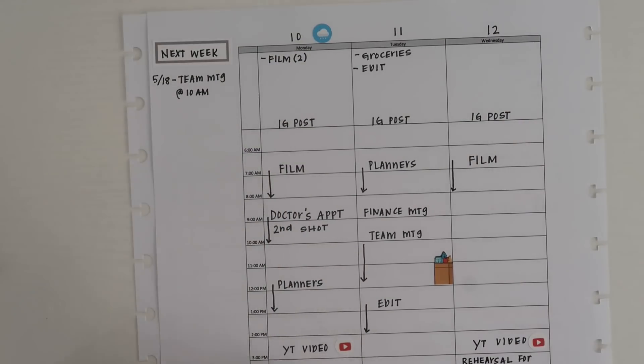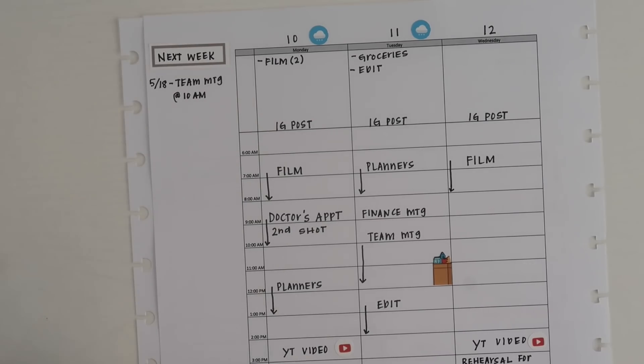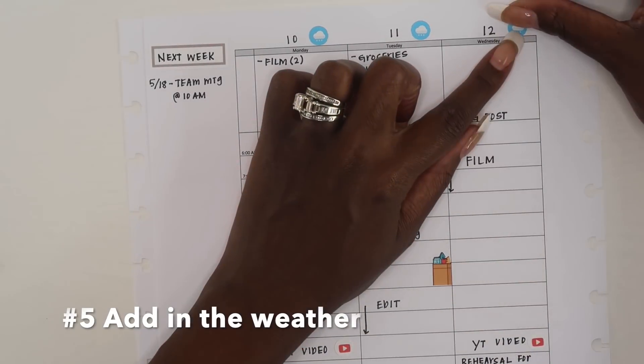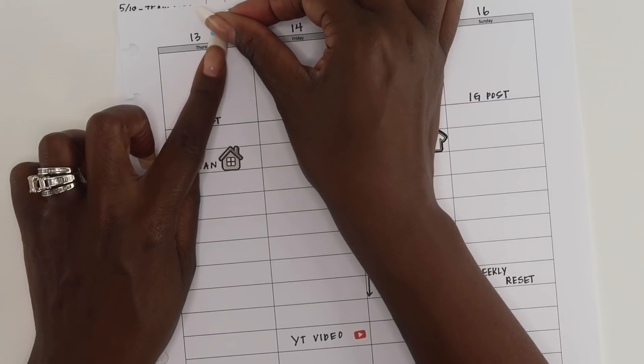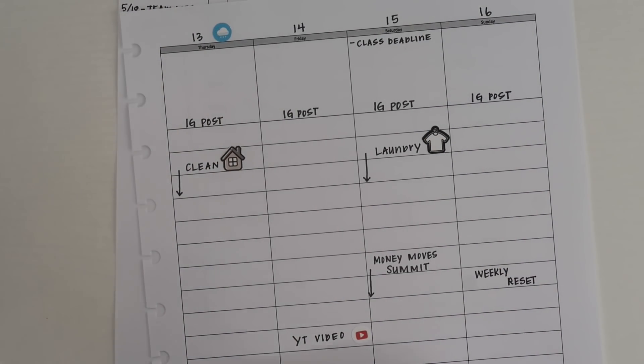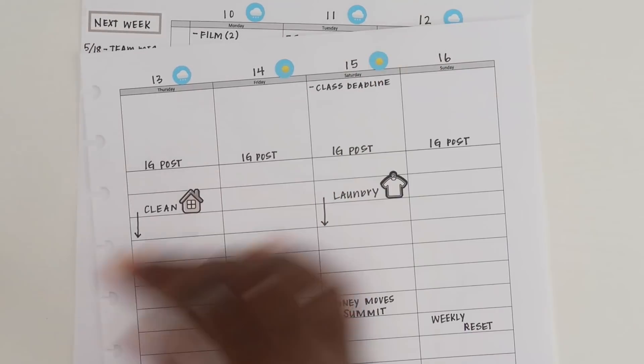My next tip is to have a place where you can jot down the weather. I had gotten away from this for a couple of weeks, but I quickly came back to it when I was stuck outside without an umbrella.